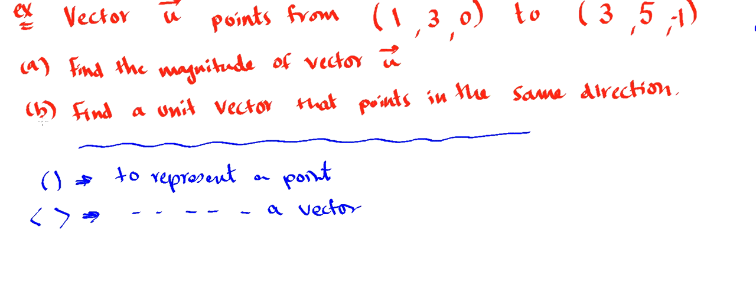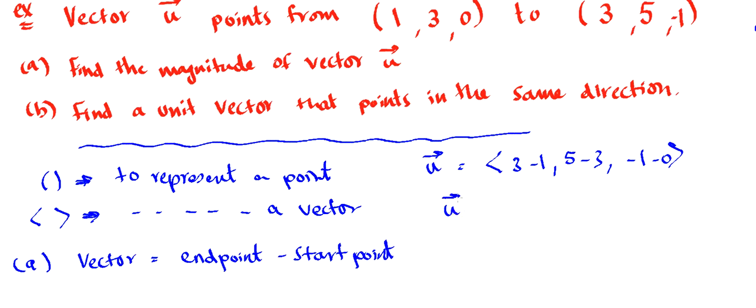Okay, so let's get back to the question. First thing we want to find the magnitude of vector u, so first we need to find vector u. And in order to find the vector, we just have endpoint minus start point. So vector u will be 3 minus 1, 5 minus 3, and negative 1 minus 0. So vector u becomes 2, 2, and negative 1.